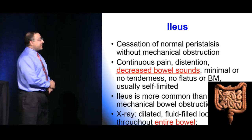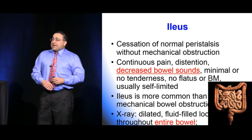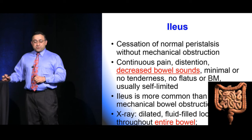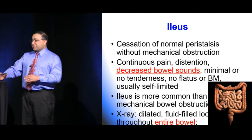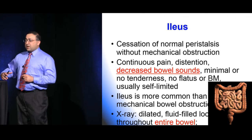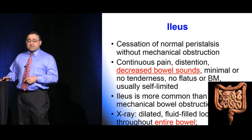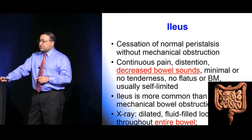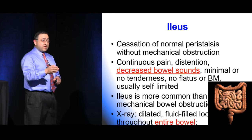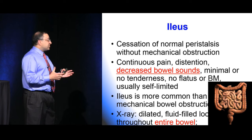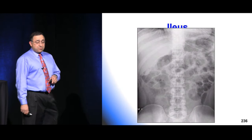Moving into the bowel — ileus versus true bowel obstruction: true obstruction produces hyperactive bowel sounds with one set of distended loops; ileus distends all loops (small and large) with decreased bowel sounds. Serial X-rays in ileus show no change between films since nothing is moving, whereas obstruction shows loops getting bigger. Ileus can be caused by medications, pancreatitis, appendicitis, or generalized illness. The classic ileus X-ray shows diffusely dilated small and large bowel loops.